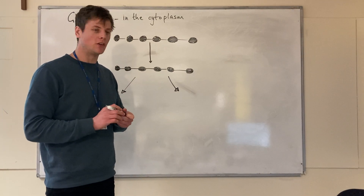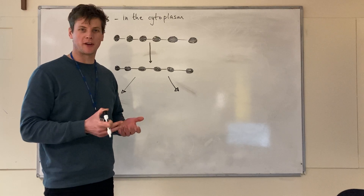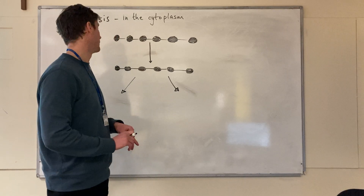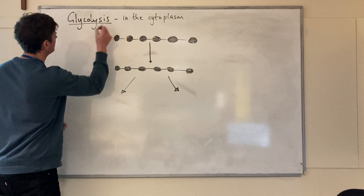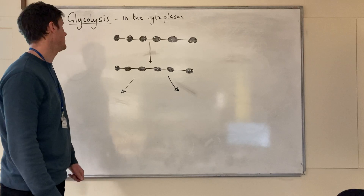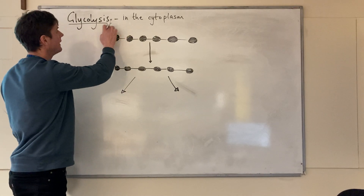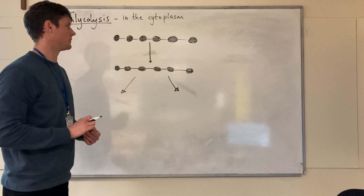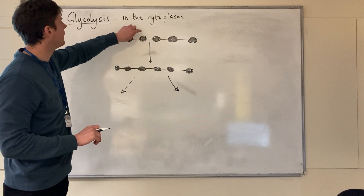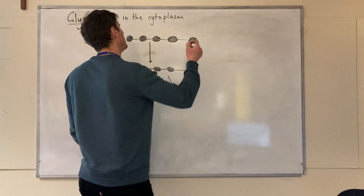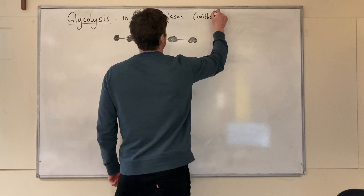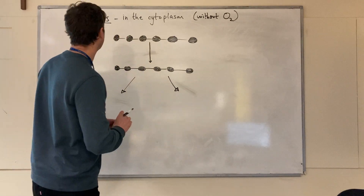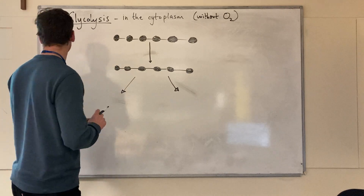This is a short video on the first stage of respiration — both the first stage of aerobic respiration and the only stage that takes place during anaerobic respiration. This is glycolysis. It takes place in the cytoplasm, and in any of your responses it's worth linking those two things together: glycolysis in the cytoplasm. This is the only part of respiration that is able to occur without oxygen — this is the anaerobic stage of respiration.